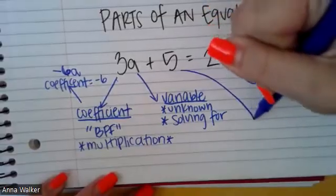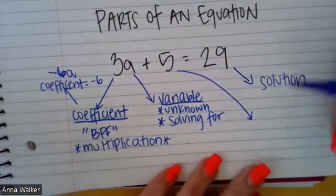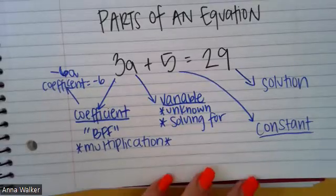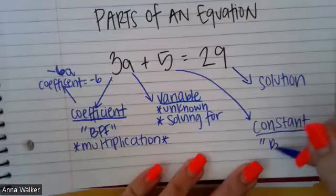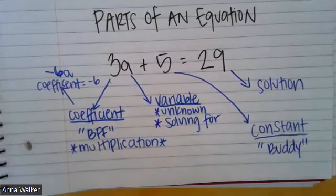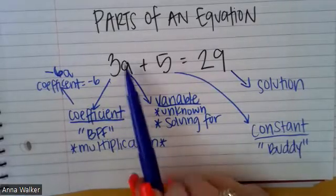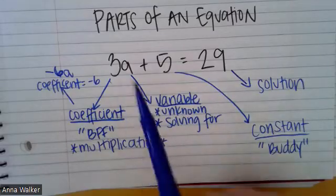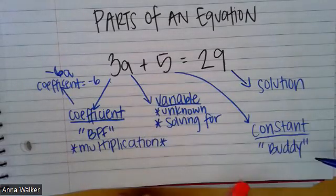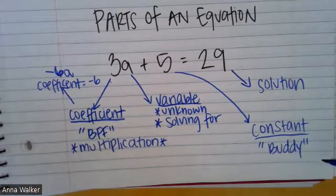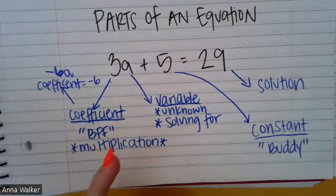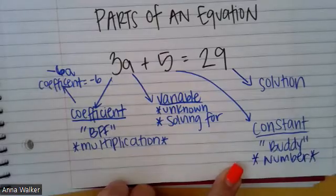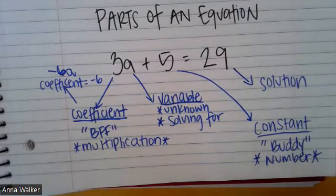The last piece of the equation is the number on its own — the number five — and this is called a constant. I like to think of this number as the variable's buddy. They are on the same side as the variable, but they're not best friends with the variable like the coefficient — they're friendly, they hang out, maybe they have one or two classes together, but they're not best friends. The constant is always just a number on its own, so any time we see a number on its own, that's a constant.